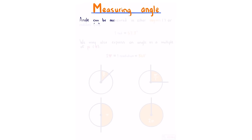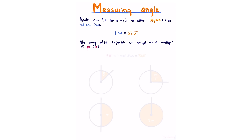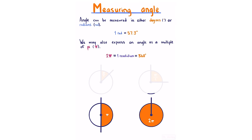Angles can be measured in degrees or radians. One radian equals 57.3 degrees. We may also express angles as multiples of pi: one full revolution is 360 degrees or 2π, half a rotation is π, a quarter is π/2, and an eighth is π/4.